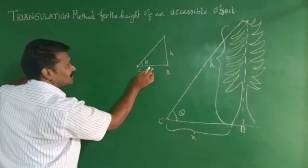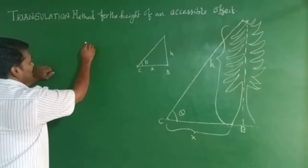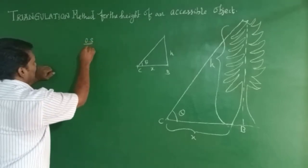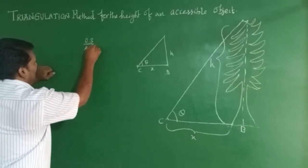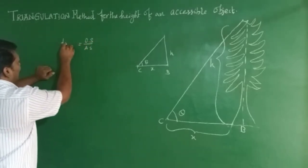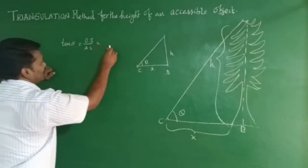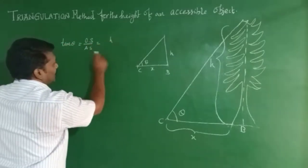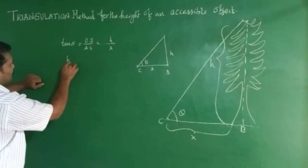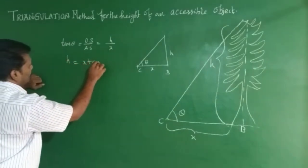This is the opposite side. This is the adjacent side. The opposite side is h, and the adjacent side is x. So, h is equal to x tan theta.